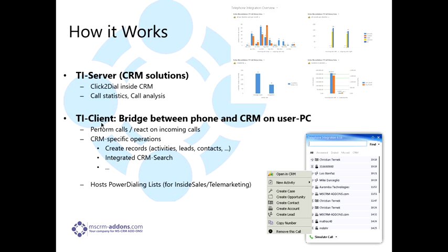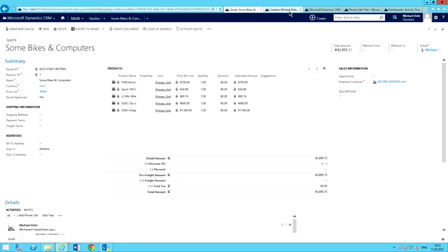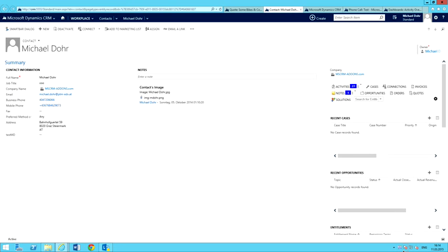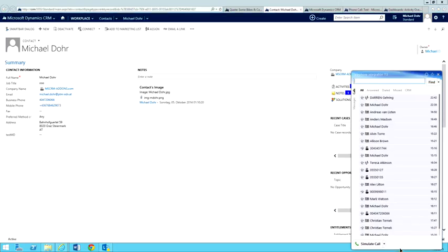Some CRM-specific operations you can do straight out of the balloon include creating records, using an integrated CRM search, and a whole host of other things. This also supports a power-dialing list for, say, your inside sales or telemarketing team. Just to quickly flip over here to the demo system and show you a few things — basically, the client lives right down here in the system tray. This is our Telephone Integration Client.